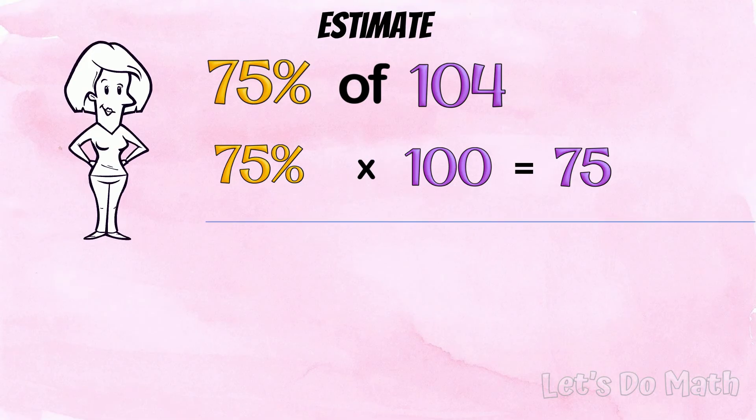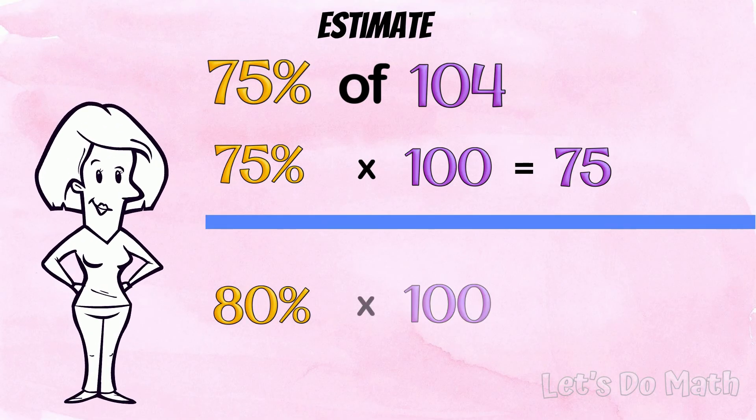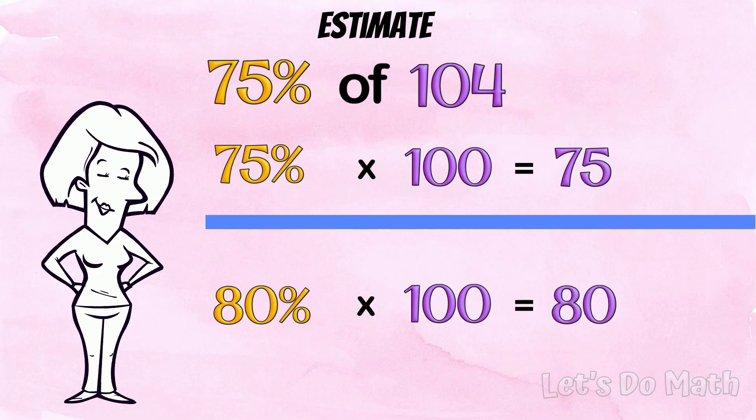You could also say that 75 rounds up to 80 and take 80% of 100 instead. It's only an estimate and both these ways work.